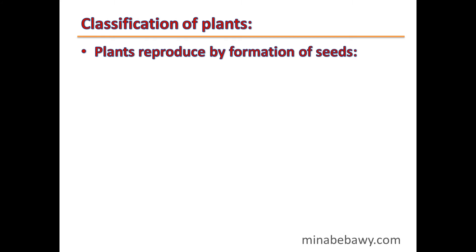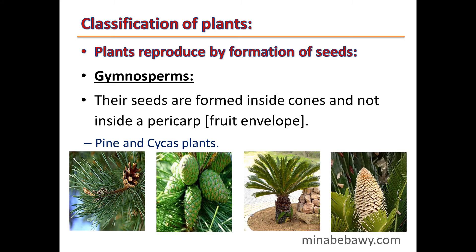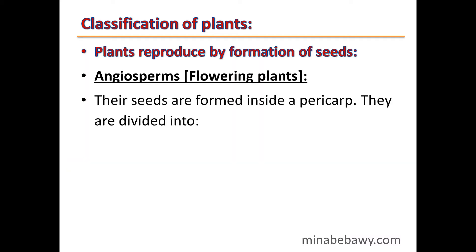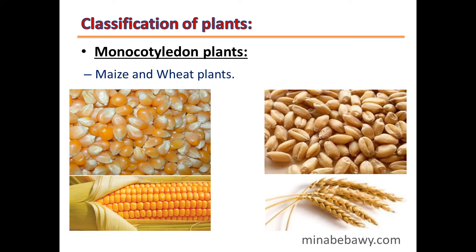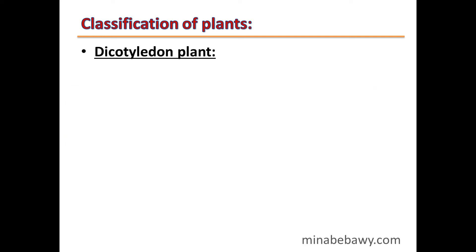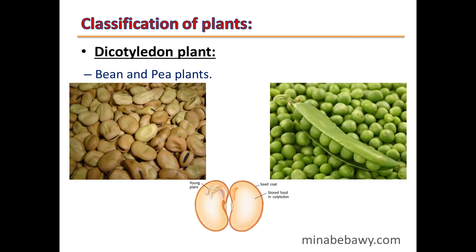Other plants reproduce by the formation of seeds. They are divided into gymnosperms and angiosperms, which are called flowering plants. Gymnosperms have seeds formed inside cones and not inside a fruit envelope, such as pine and sequoia plants. Angiosperms or flowering plants have seeds formed inside a fruit; they are divided into monocotyledon plants, such as maize and wheat — whose seeds are monocotyledon — and dicotyledon plants, such as bean and pea, whose seeds can split into two halves.